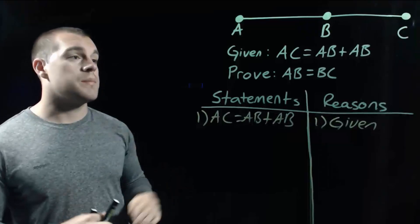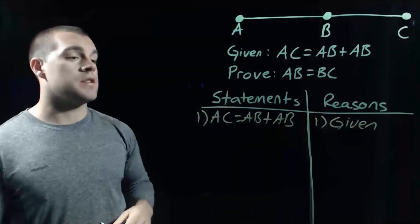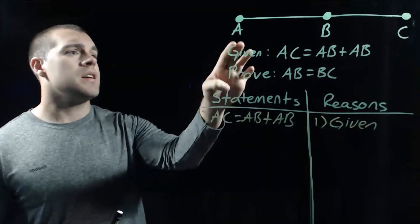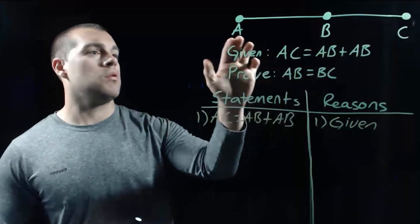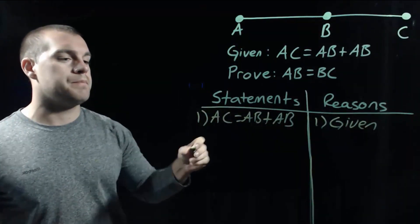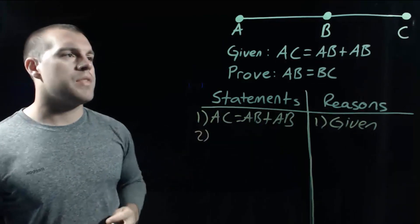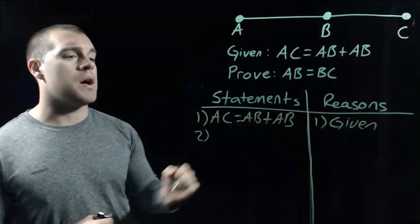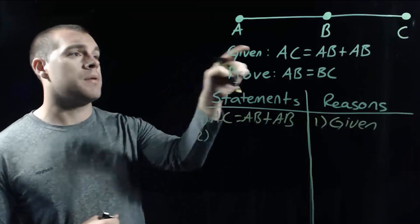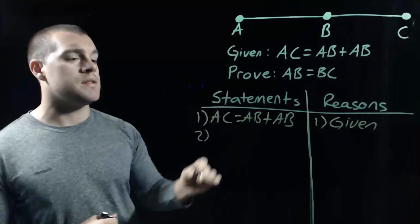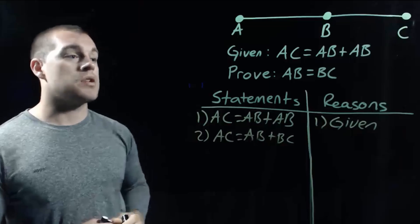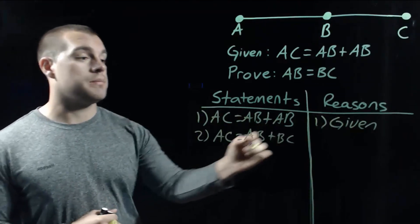Now we somehow need to get BC involved in this proof. There's another way that we could write out the segments that make up AC, and I'm thinking let's use our segment addition postulate. We could say that AC is made up of the small piece AB and BC, and that's our segment addition postulate.